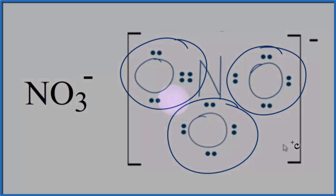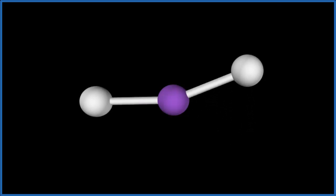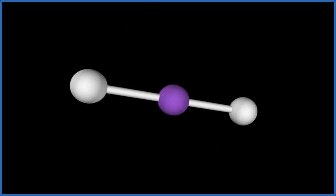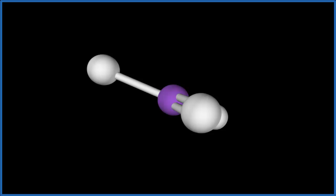The purple is the central nitrogen atom. We're going to add those three oxygen atoms - one, two - they spread out as far away from each other as possible. Then we have that third oxygen with the double bond.